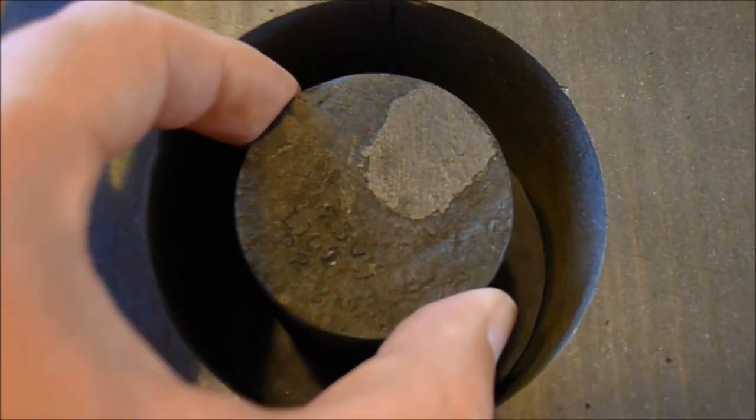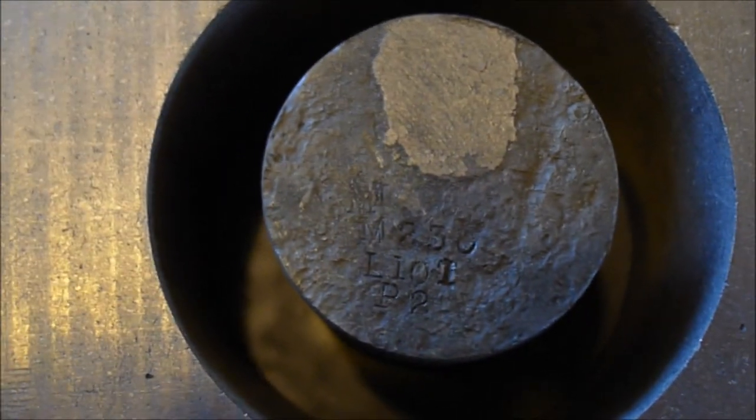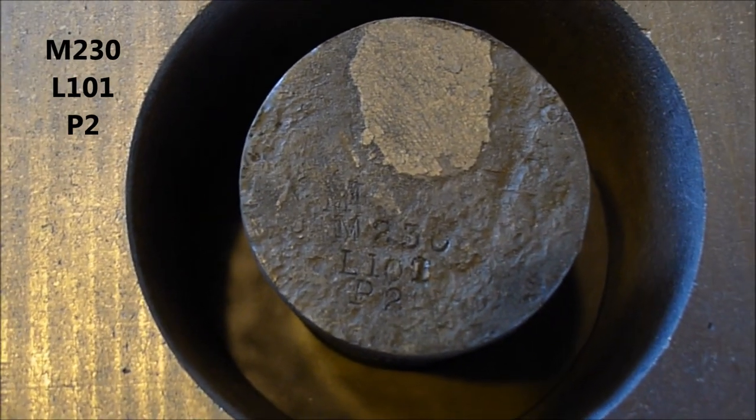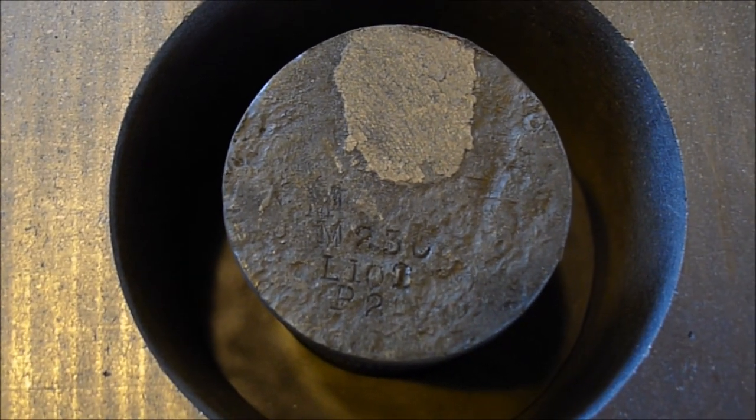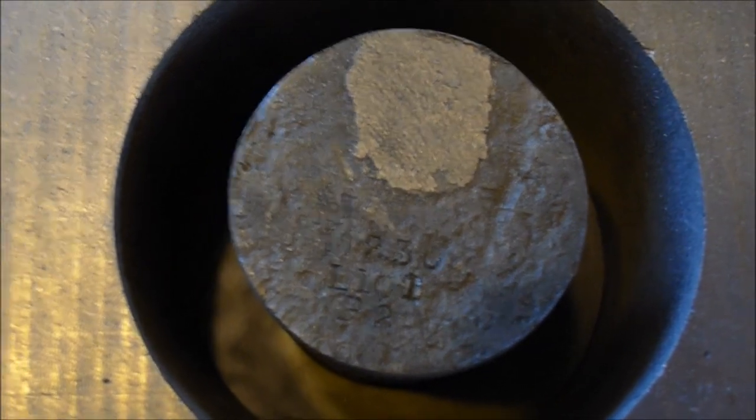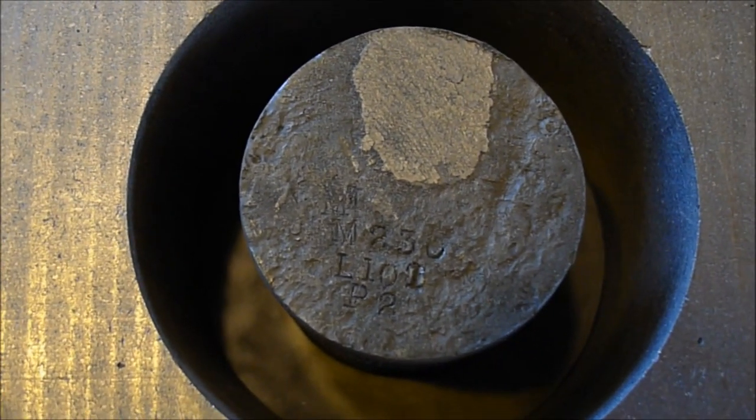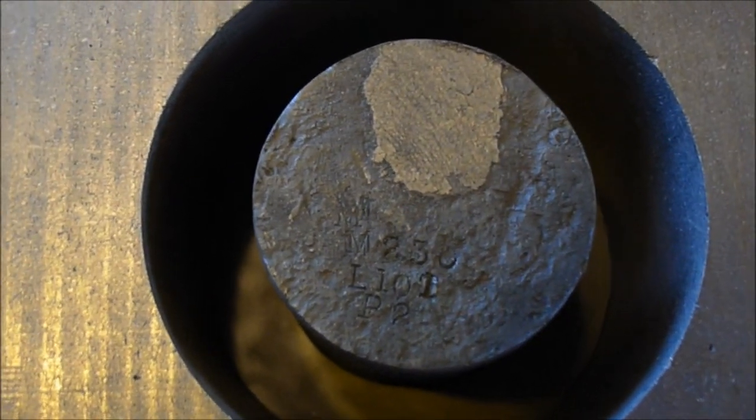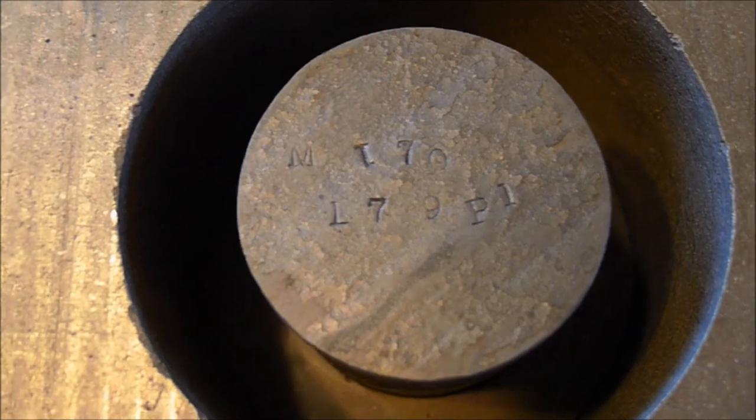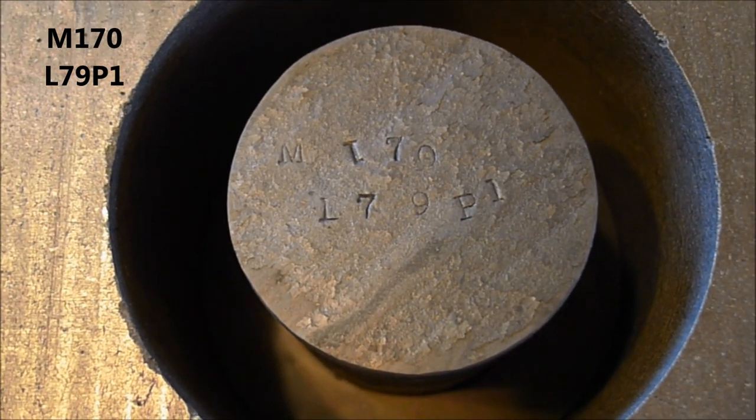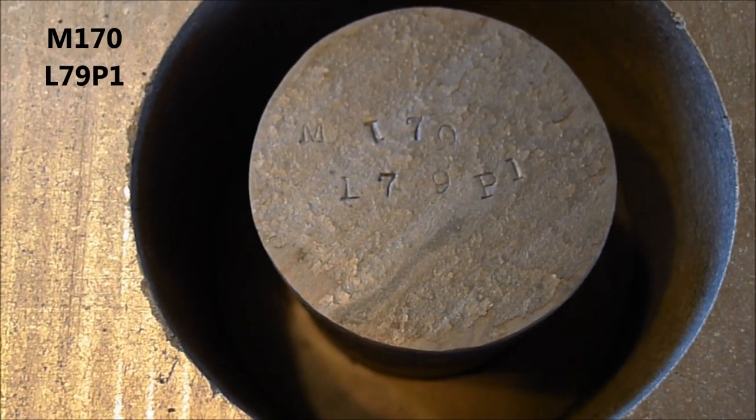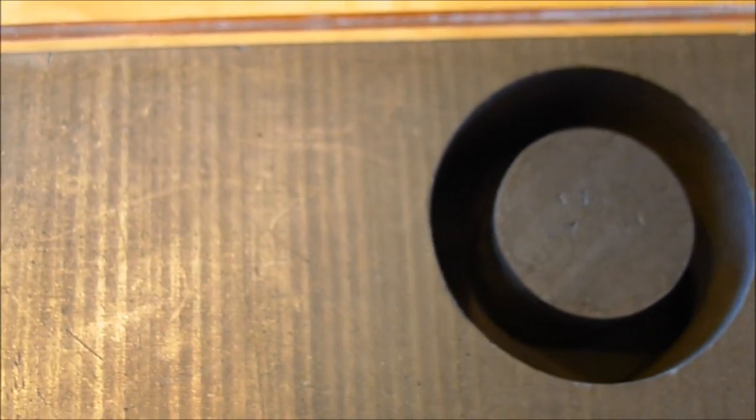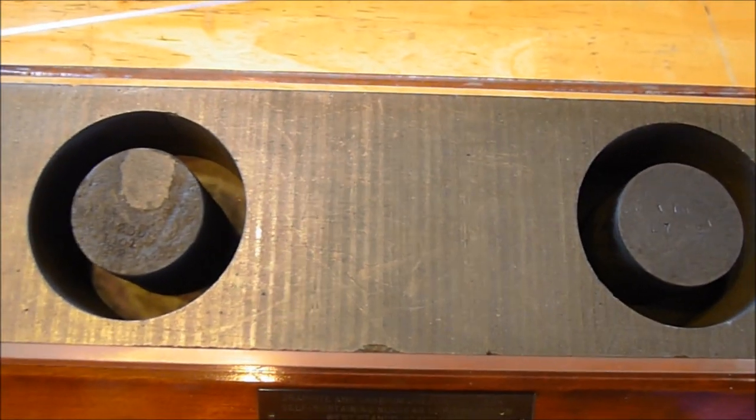So this was some of the first uranium metal ever mass produced. The fuel elements contain numbering. If we look down here real close, we can see that this one has the number M230L101P2. I don't know what company that refers to, I don't know who made this fuel, I don't know what that number means. But if anybody watching this video has a clue, please let me know. The history here is just profound and I would love to know if anybody can tell me what that means. The other one here on the right, the number is M170L79P1. Again, if you know what that means, I welcome your comments.